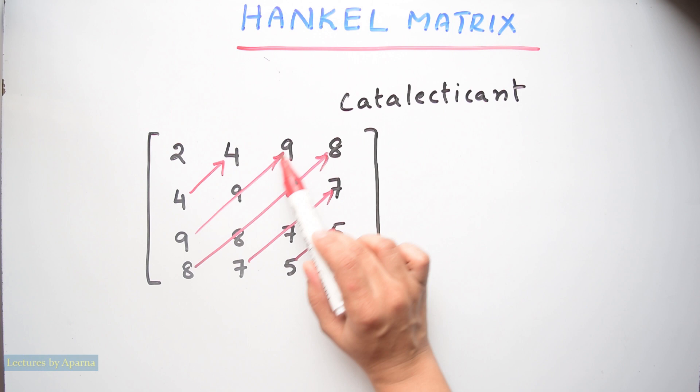This 4 and 4 is same, this 9 is same, 8 is same, 7 is same, 5 is same. So any matrix in which elements come in this way, it will be a Hankel matrix.